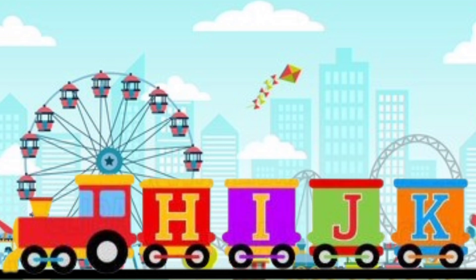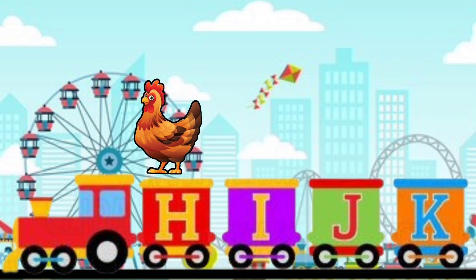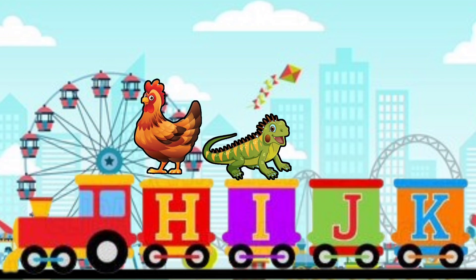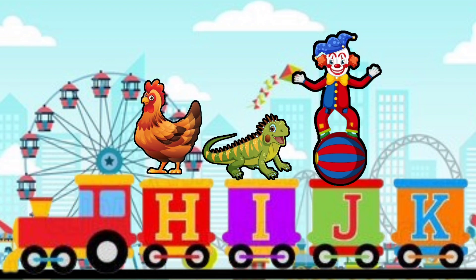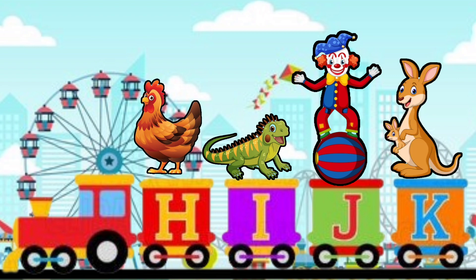H, I, J, K. H for hen, I for iguana, J for joker, K for kangaroo.